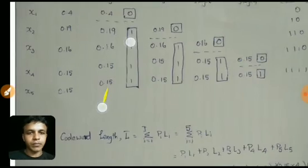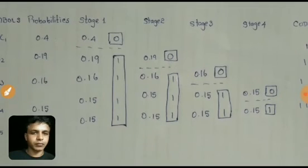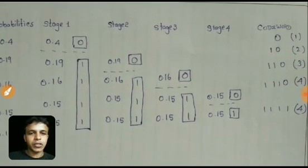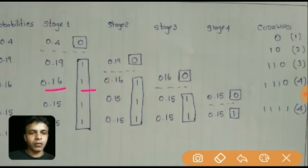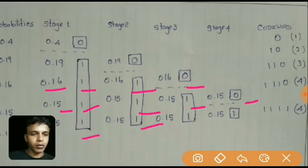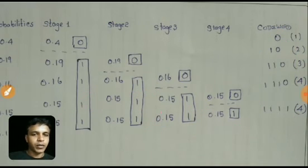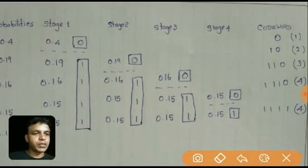Symbol x3 with probability 0.16 has the codeword 1 1 0. Symbol x4 with probability 0.15 has the codeword 1 1 1 0. Symbol x5 also with probability 0.15 has the codeword 1 1 1 1. I have generated the codewords based on this rule and written down the number of bits in each codeword.